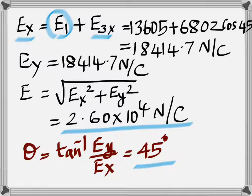And so you find the resultant by taking the square root of the sum of their squares. And to find the angle, you find tan inverse EY by EX, you get 45 degrees.